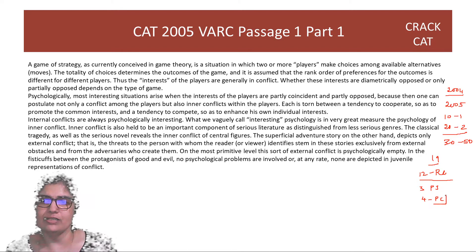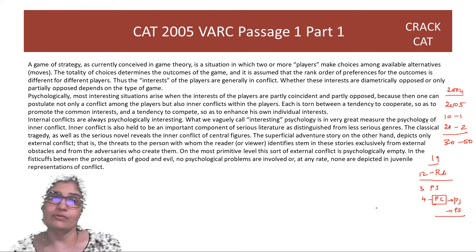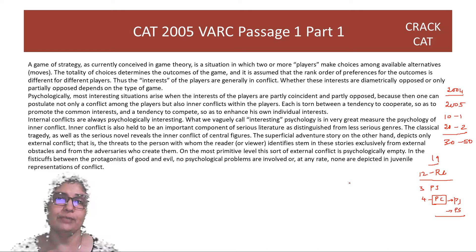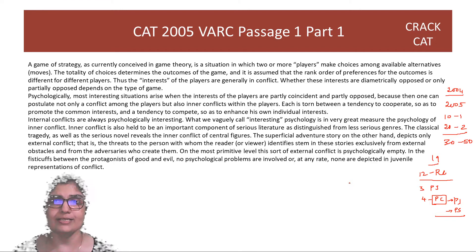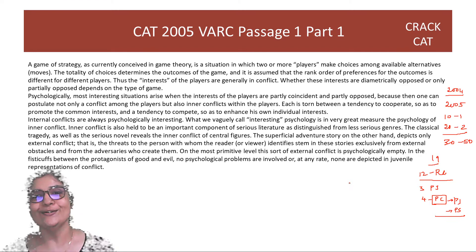Para completions are very close to para jumbles and para summaries, so we should be good at those as well. These 19 questions are what we are going to discuss right now. Some of these passages are heavy, so I would recommend that please go to the description box, download the PDF, solve it by yourself, and then look at the video solution. If it gets a little heavy, just pause it and continue — don't miss out on this, because even current CAD passages in 2018, 2019, and 2017 have these sorts of heavy passages.